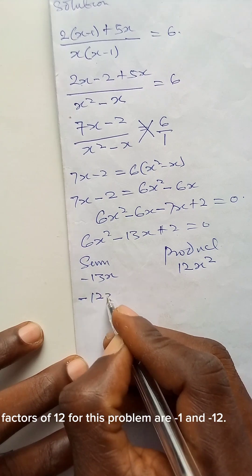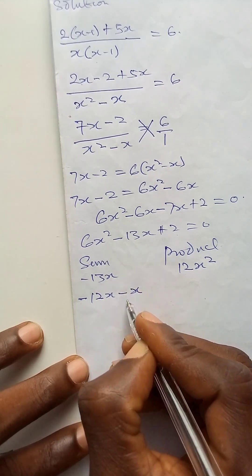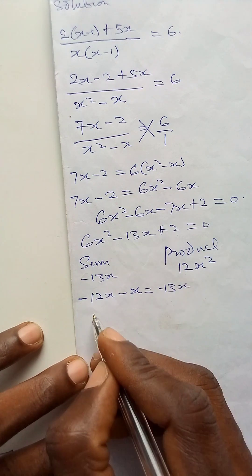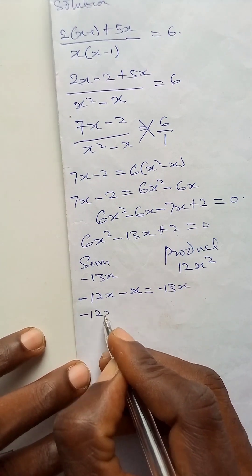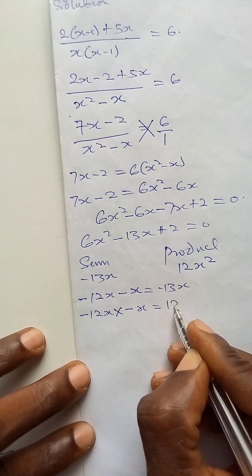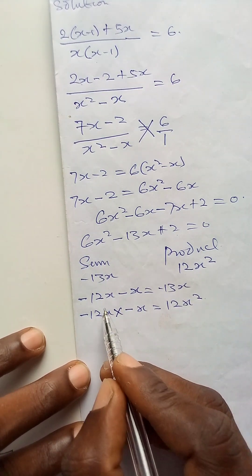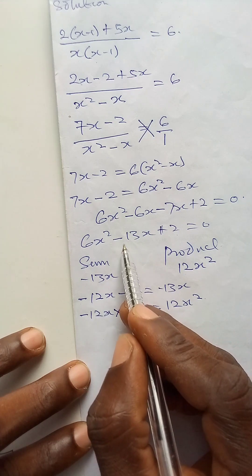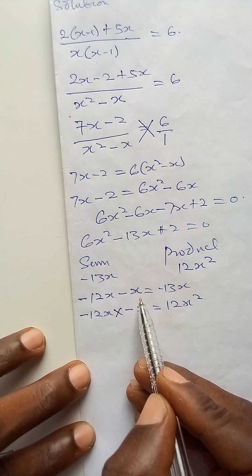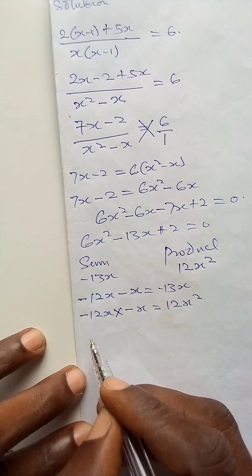So minus 12x minus x, that is minus 1x, will give us minus 13x. And minus 12x times minus x will give us 12x squared. So I will now substitute minus 13x for minus 12x minus x into the original quadratic equation.